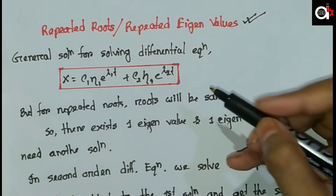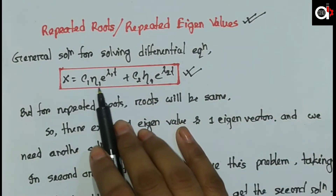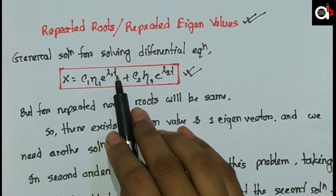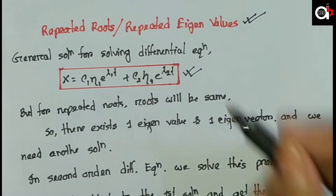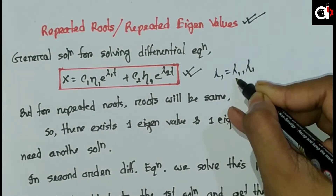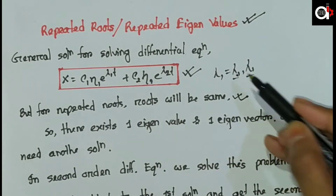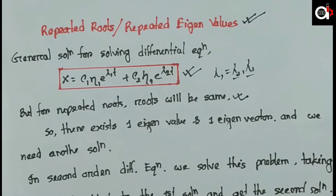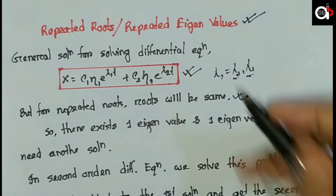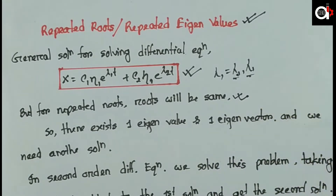The general solution is the same — we know how the differential equation system is solved. The general solution is c1 times eigenvector eta1 times e to the power lambda t. When distinct eigenvectors exist, this forms the general solution. But for repeated roots, when lambda1 equals lambda1, there will exist one eigenvalue and one eigenvector, but we need another solution — we have to find an additional eigenvector.